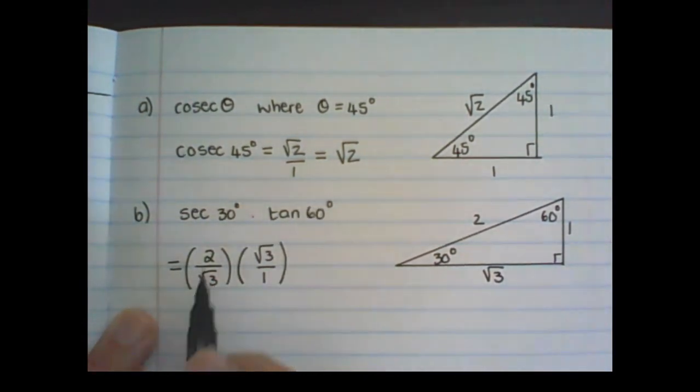And I can simplify this. The square root of 3's will cancel each other out, and I have 2 over 1, which will become 2.